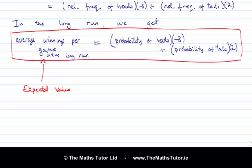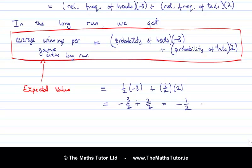What's the probability of heads? It's one half, and we have −3; the probability of tails is one half times 2. Working that out: −3/2 + 2/2 = −1/2, or −0.5. And that's exactly what we saw in the Excel sheet — in the long run the average winnings per game tended to be around minus 0.5.